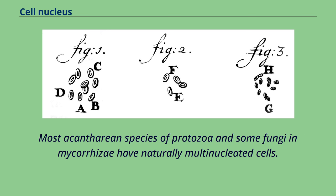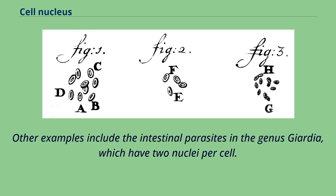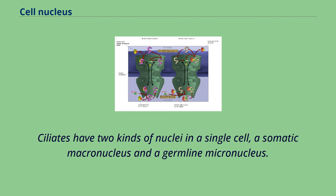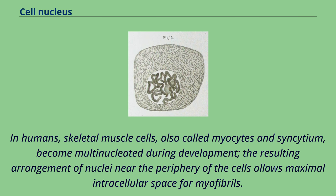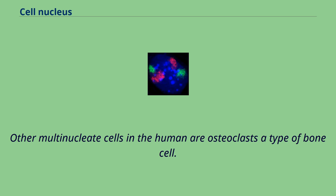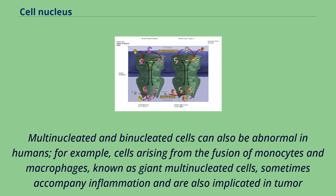Most decacantharian species of protozoa and some fungi and mycorrhizae have naturally multinucleated cells. Other examples include intestinal parasites in the genus Giardia, which have two nuclei per cell. Ciliates have two kinds of nuclei in a single cell: a somatic macronucleus and a germline micronucleus. In humans, skeletal muscle cells, also called myocytes and syncytia, become multinucleated during development. The resulting arrangement of nuclei near the periphery of the cells allows maximal intracellular space for myofibrils. Other multinucleate cells in humans are osteoclasts, a type of bone cell. Multinucleated and binucleated cells can also be abnormal; for example, cells arising from the fusion of monocytes and macrophages, known as giant multinucleated cells, sometimes accompany inflammation and are also implicated in tumor formation.